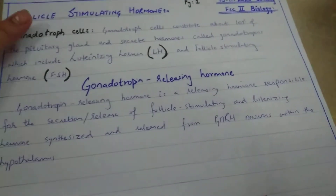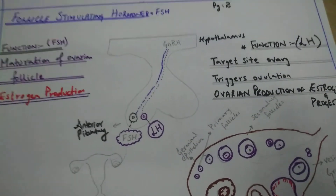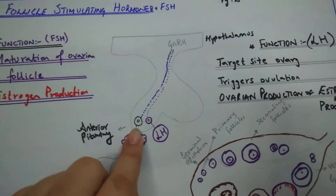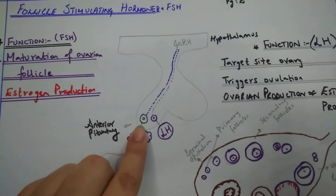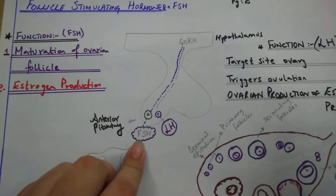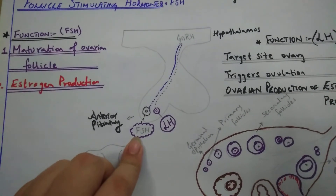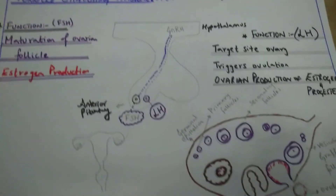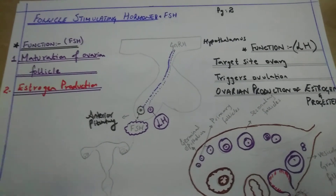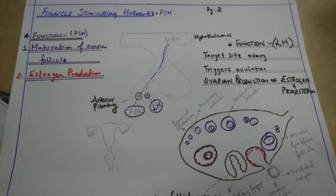In the hypothalamus region, there are neurons that release gonadotrophin releasing hormone. This hormone activates the gonadotroph cells in the anterior pituitary to release two types of gonadotrophins: luteinizing hormone and follicle stimulating hormone. So anterior pituitary hormones include: growth hormone, adrenocorticotrophic hormone, follicle stimulating hormone, and luteinizing hormone.